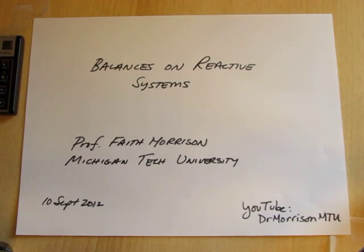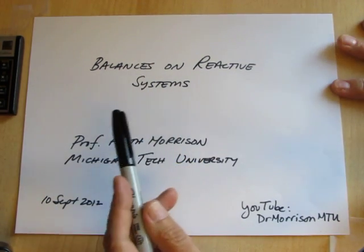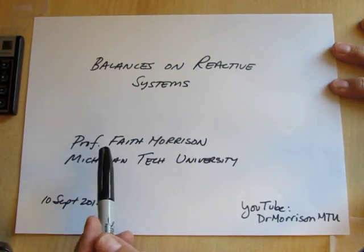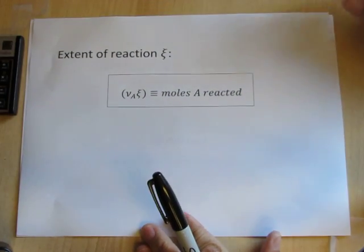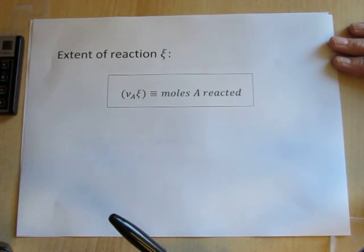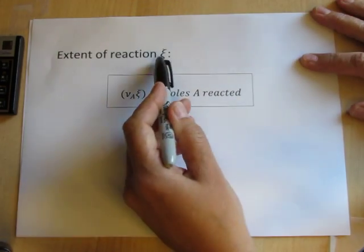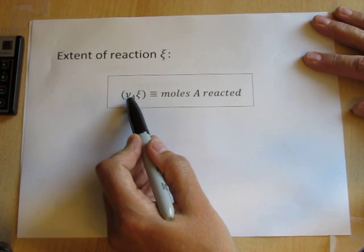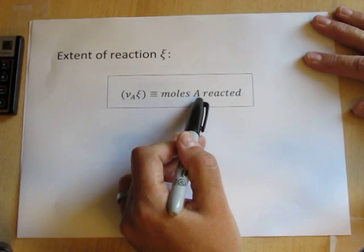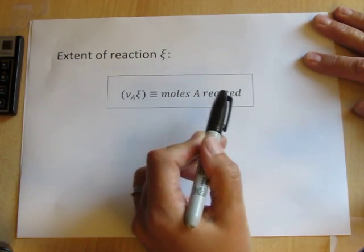I'd like to do a problem on the subject of balances on reactive systems in chemical engineering, and in particular, I'd like to introduce using the extent of reaction in problem solving for reactive systems. The extent of reaction, Xi, is a parameter that when combined with the stoichiometric coefficient, allows us to express the number of moles of a species A reacted within a certain chemical reaction.